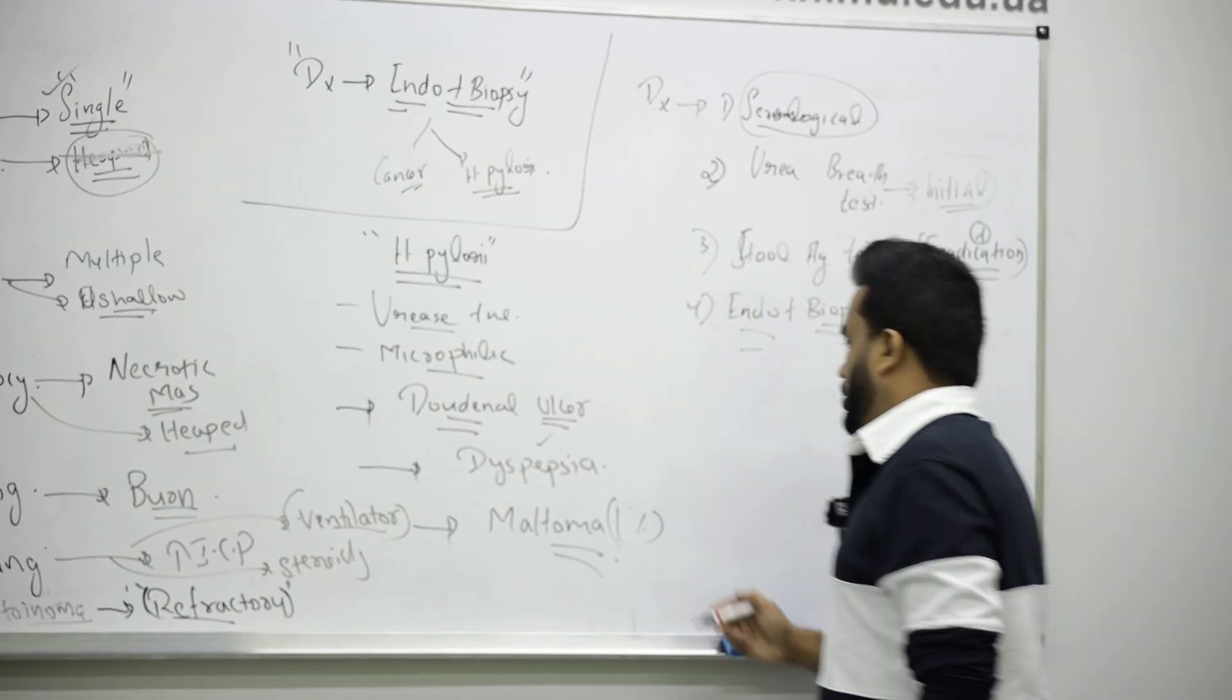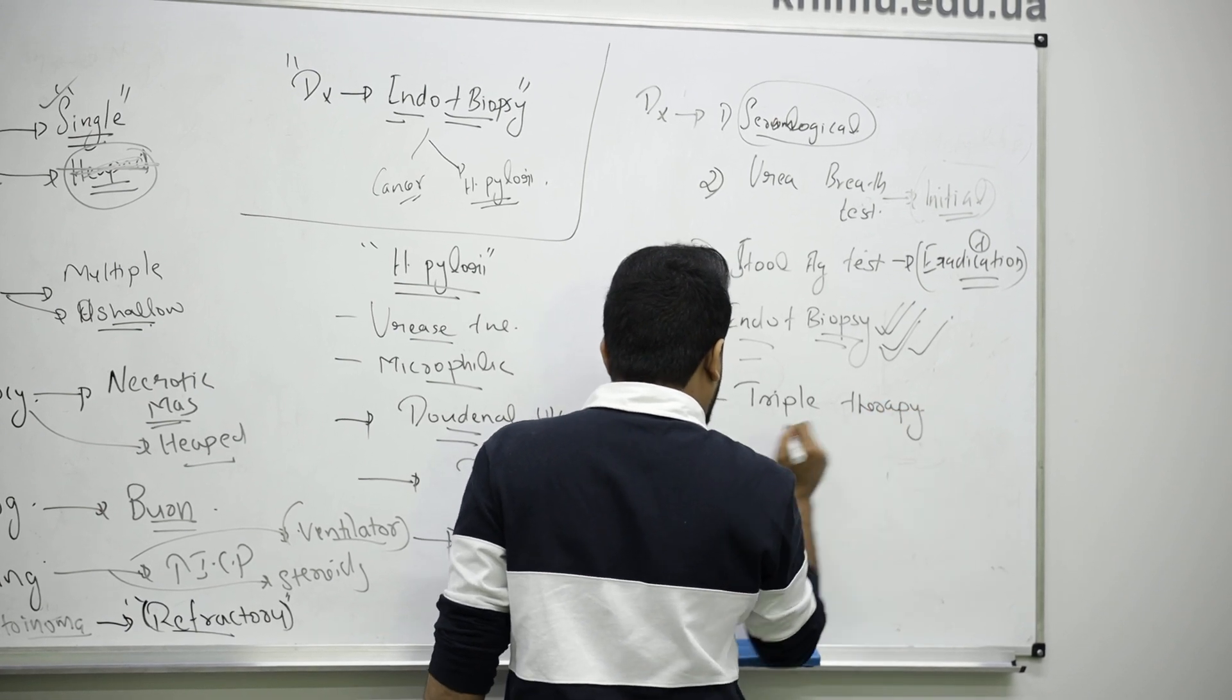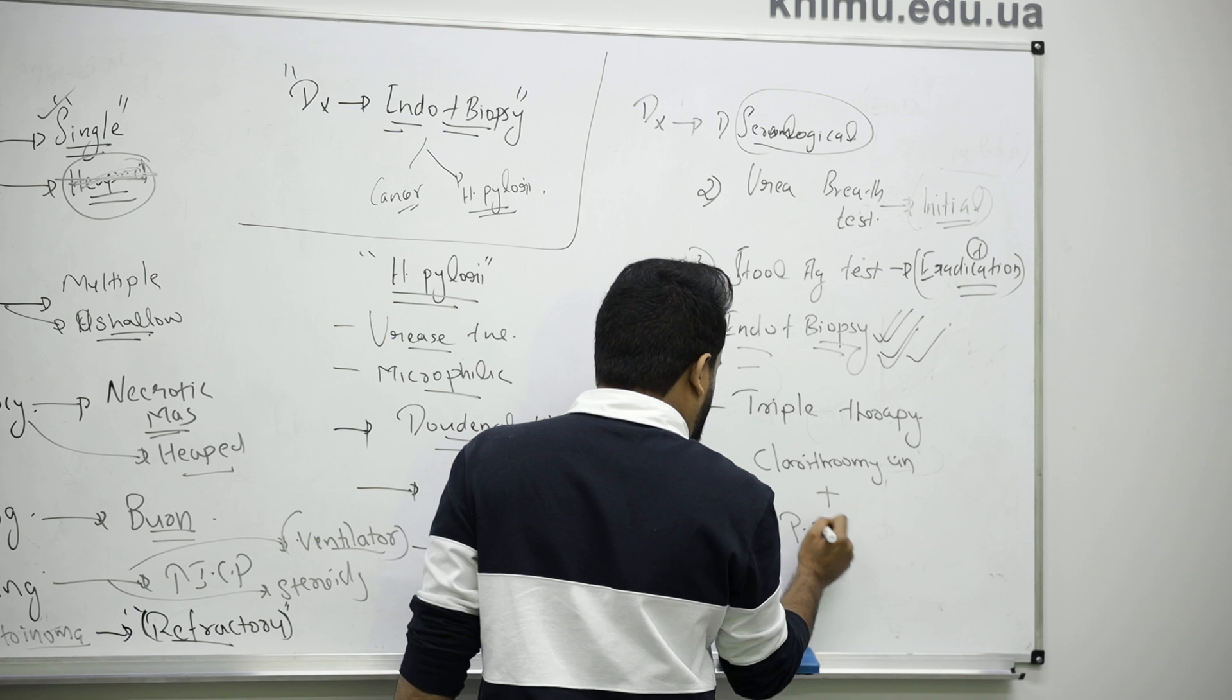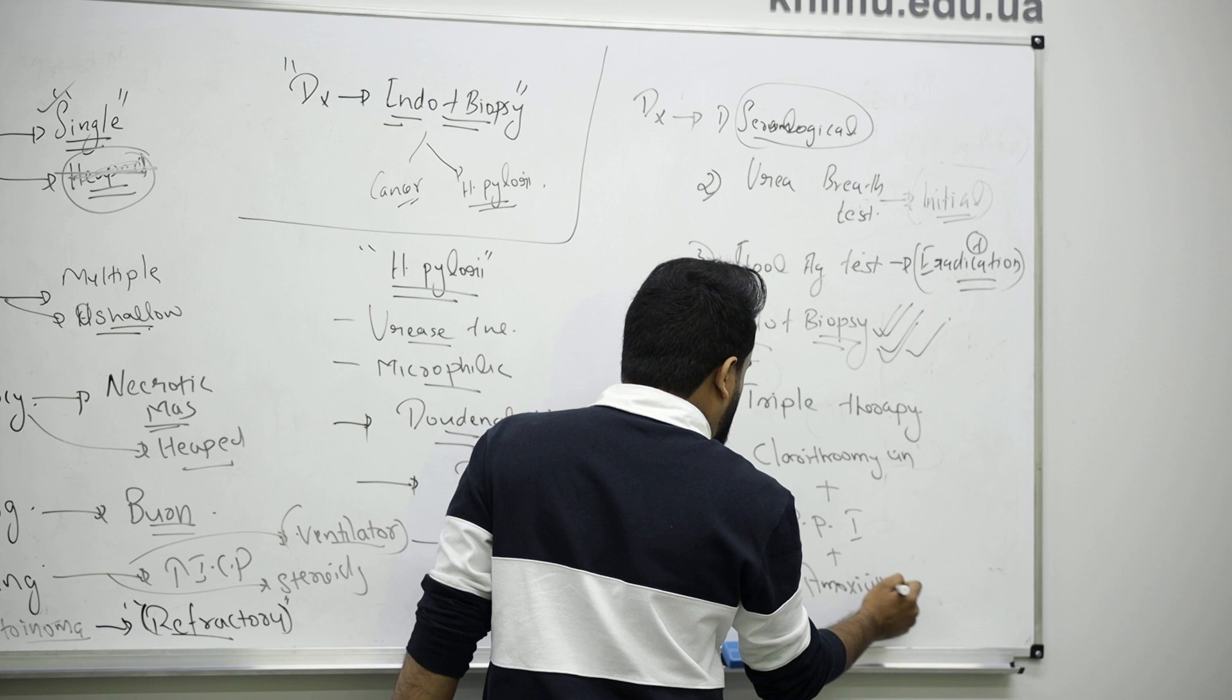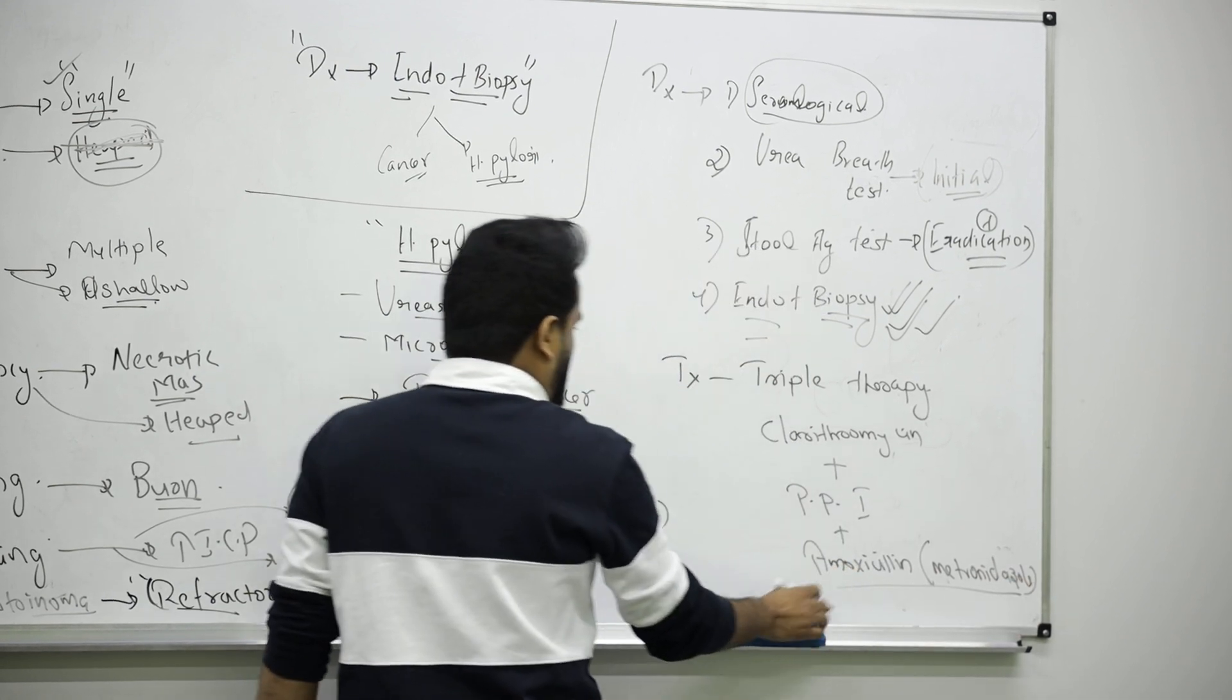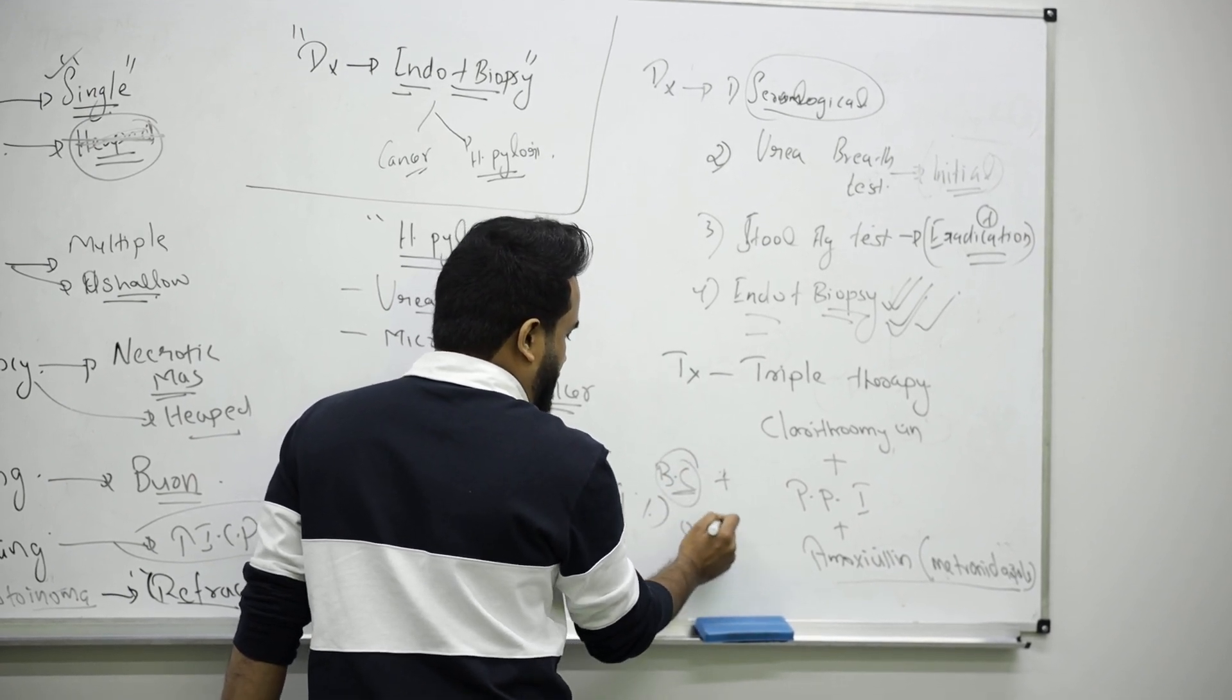Treatment, we use something called triple therapy. It includes a combination of clarithromycin plus proton pump inhibitor and amoxicillin. In some cases we can't have amoxicillin, at that time we will give them metronidazole. If you add bismuth substrate, a protective ulcerative drug, it will become quadruple therapy. But commonly we use triple therapy for Helicobacter pylori.